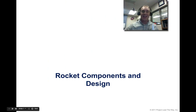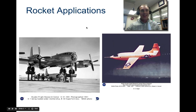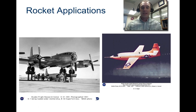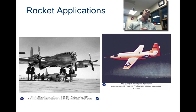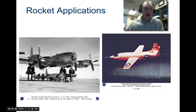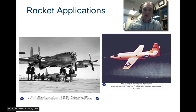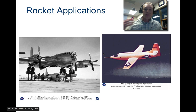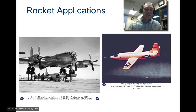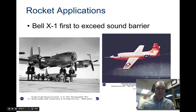We're going to look at rocket components and design. The X-1 — this is Chuck Yeager's famous flight where he broke the sound barrier, flew Mach 1.06. It was dropped from a bomber using liquid propellants: oxygen and liquid alcohol, because it had to get up to speed before they could actually launch it. Launching from the ground would have taken too much fuel.